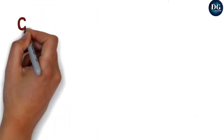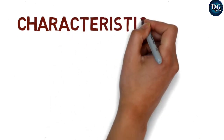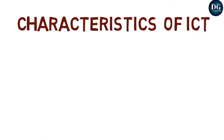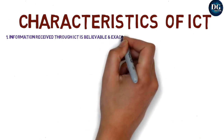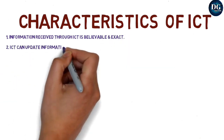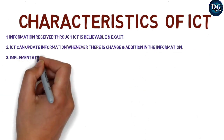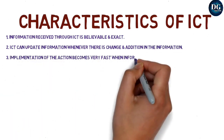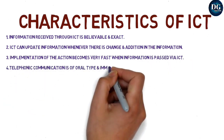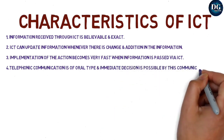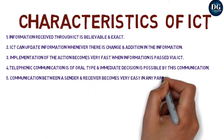Then come the characteristics of ICT. The information you receive through ICT is accurate and good. Up-to-date information can be used in ICT and it can be changed very quickly. It can be implemented and passed very fast. It supports telecommunication and immediate decisions through possible communication. The communication between sender and receiver is made very easy through ICT.